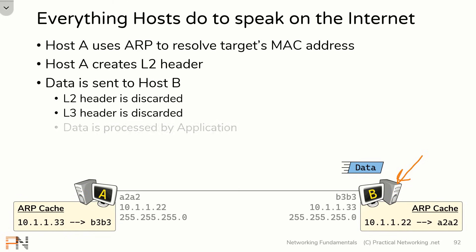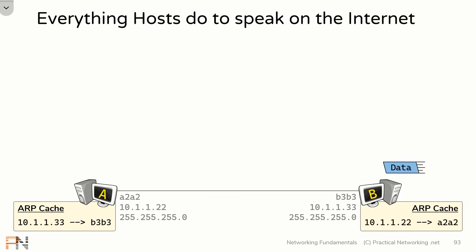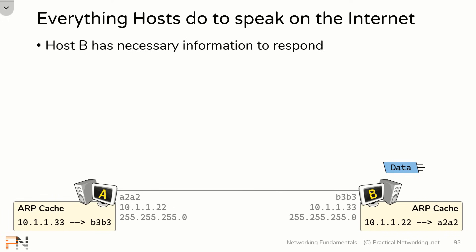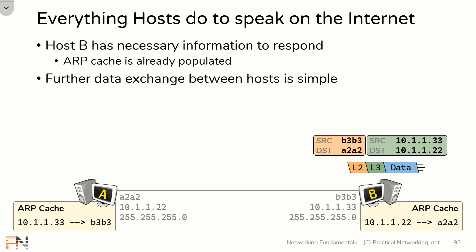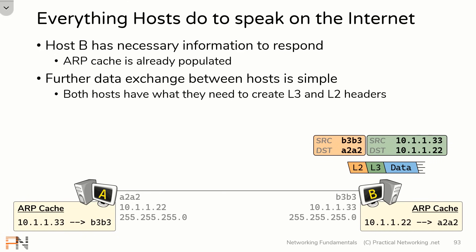Finally, the application on host B can process the data that it just received. Now, presumably, host B is going to have a response — some ones and zeros it's going to have to send back to host A. But the good news is host B has all the necessary information in order to respond much quicker. Host B knows who it's trying to communicate with, so it's able to create the layer 3 header with a source IP address of host B and a destination IP address of host A. And since host B's ARP cache is already populated, it's able to create a layer 2 header that includes its own MAC address as the source and host A's MAC address as the destination. Any further data exchange between these two hosts now happens very easily because both hosts have everything they need to create the layer 3 and layer 2 headers successfully.